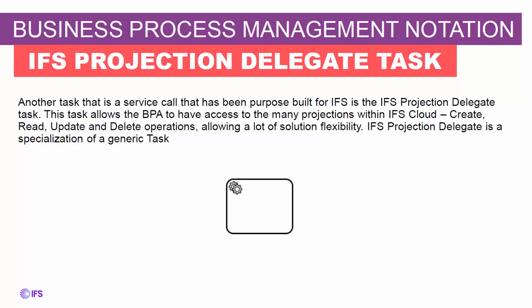The projection delegate task is another adaptation of a service task, and we expect it to be very commonly used in IFS BPAs. This is the task where you state a projection, an entity set, and the action you want to perform. Actions could be create, read, update, or delete a record. Great solution flexibility comes from being able to perform a transaction in one table and then create or update a record in a different table — this power is contained within the projection delegate task.